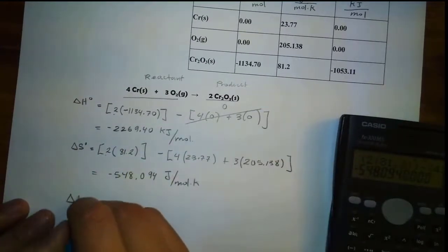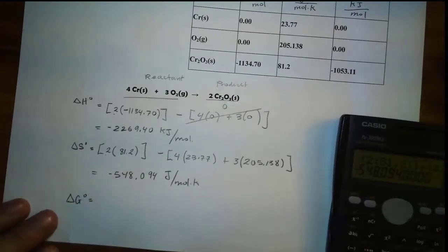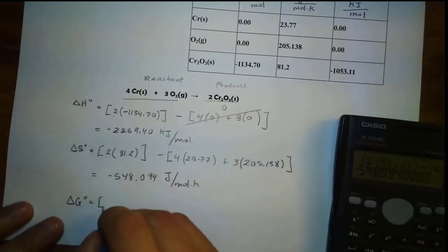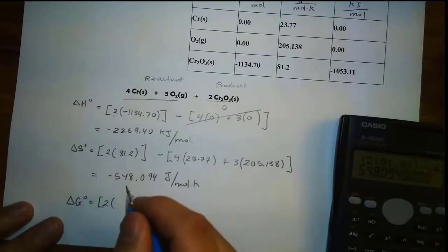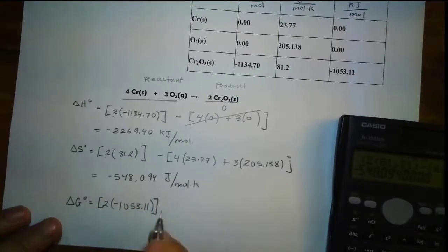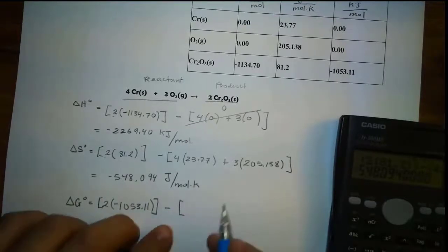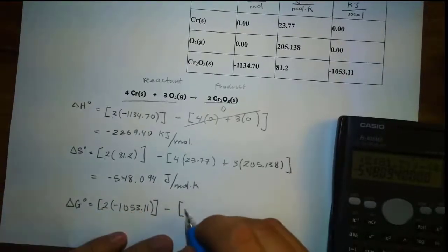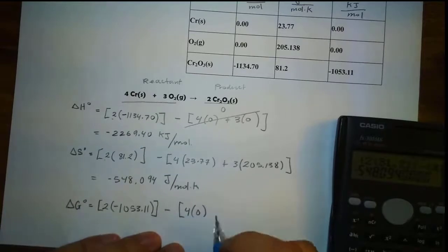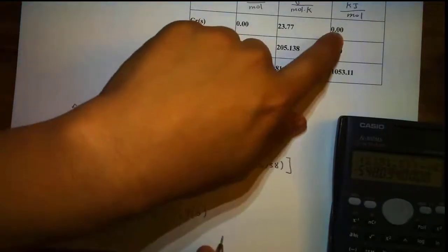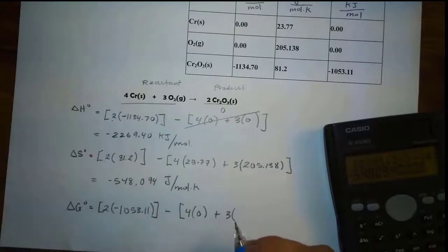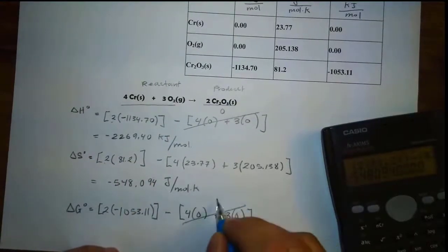Then what about delta G naught? Delta G naught is the same thing — product minus reactant. So we know the product is 2 of that compound, and that is negative 1053.11. The caret symbol groups the reactant. Minus the sum of the reactant: we have 4 times chromium — notice this is an element, so it is zero. We also have oxygen, which is an element, so it is zero.